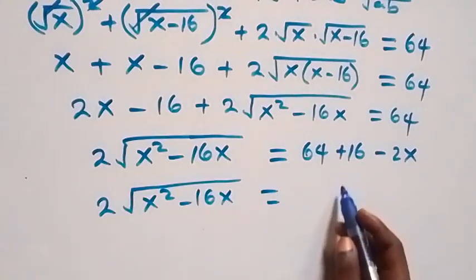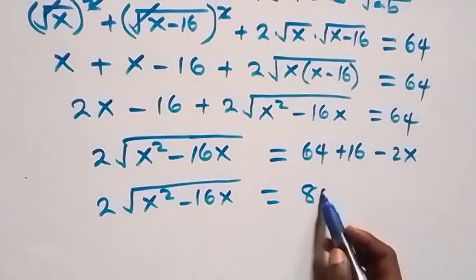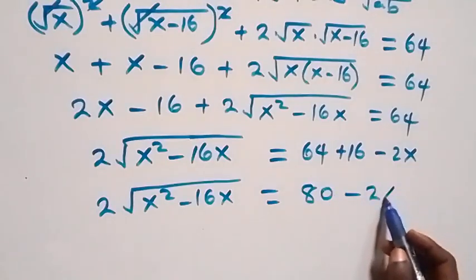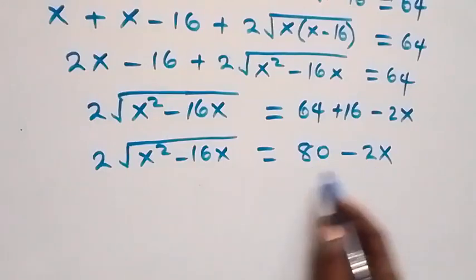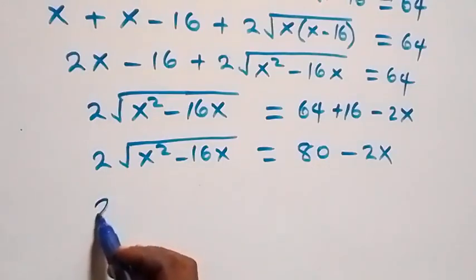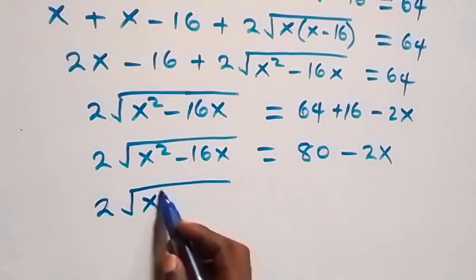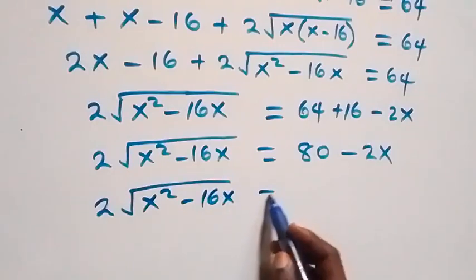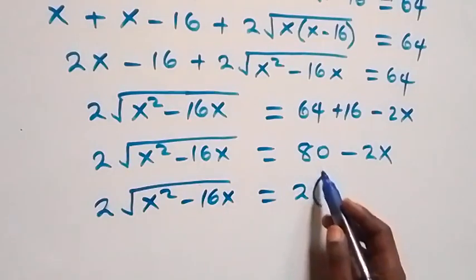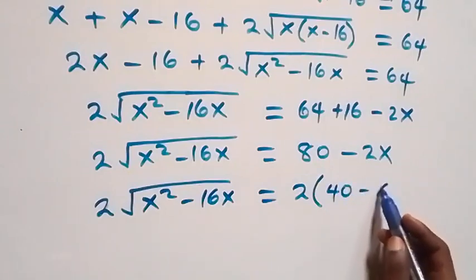This gives us 2·√(x² - 16x) equals 80 - 2x. Factoring out 2 on the right-hand side: 2·√(x² - 16x) equals 2(40 - x).